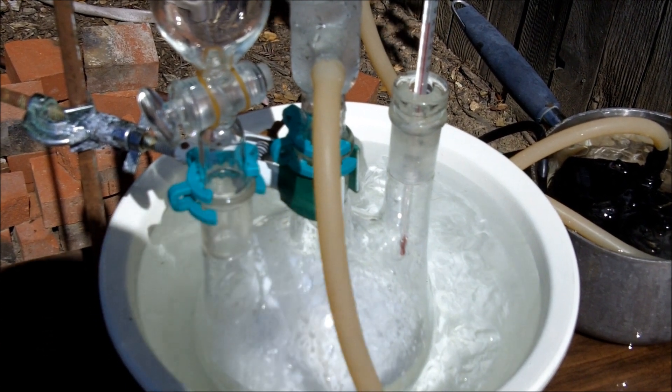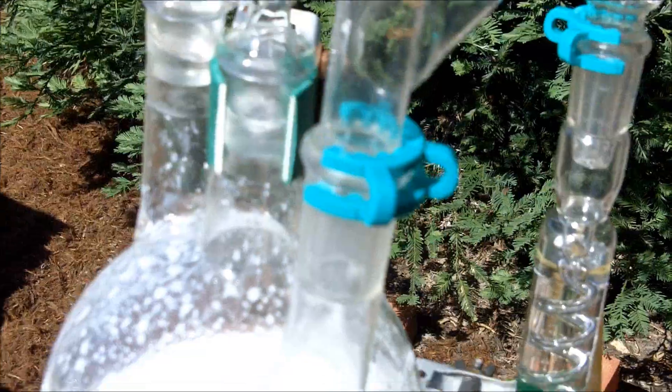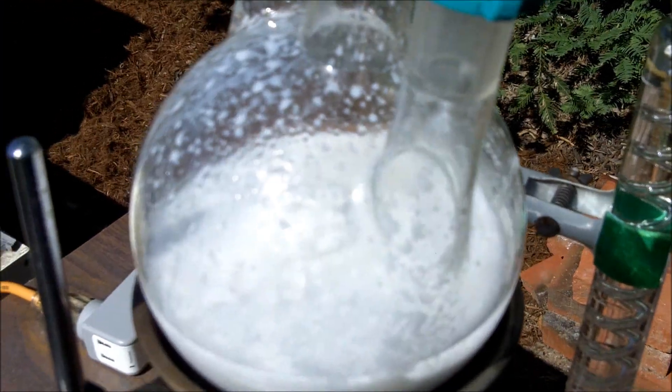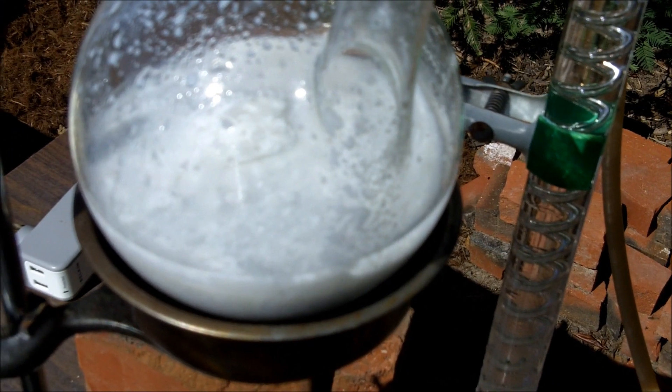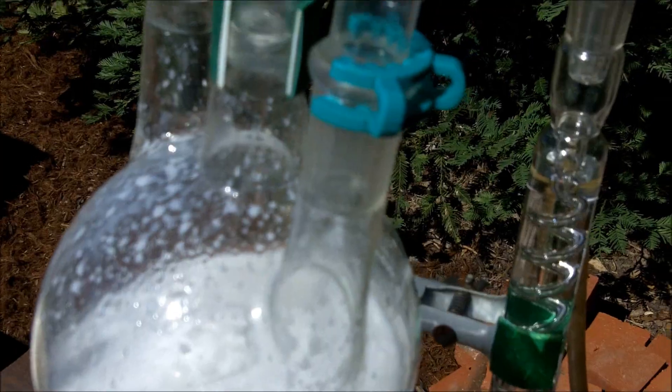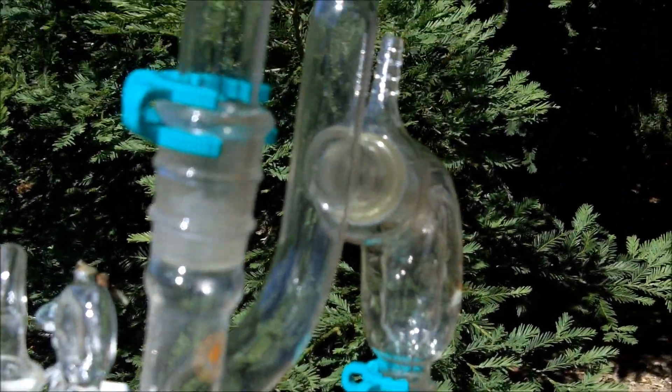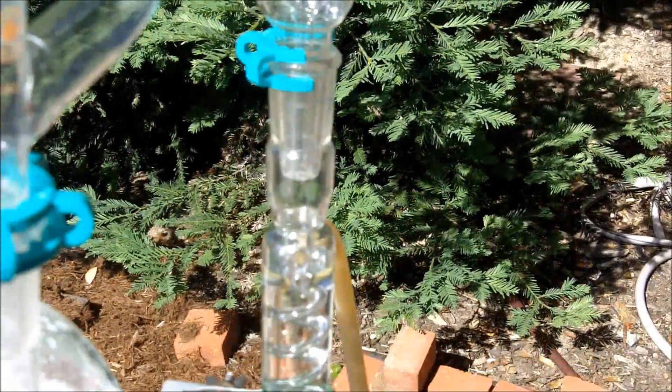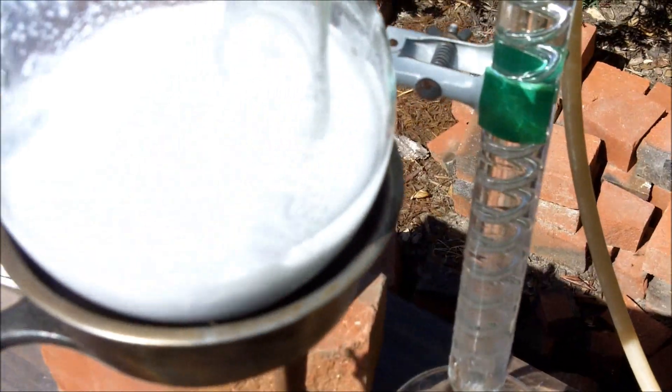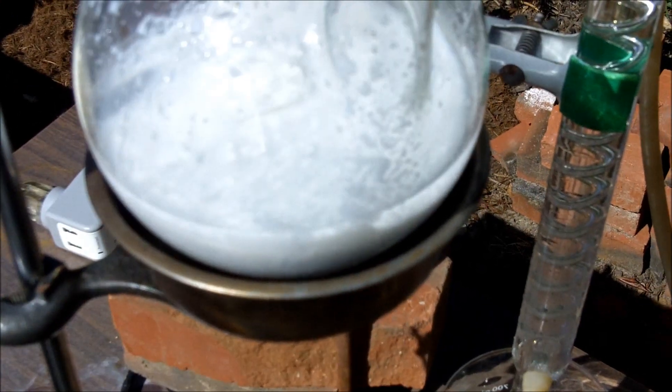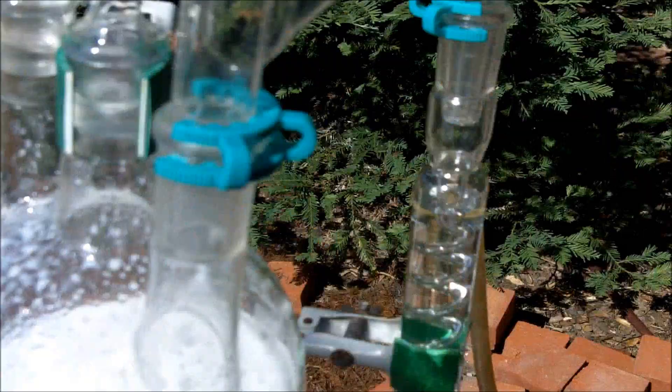Okay, here's my simple distillation setup. I've got the flask - haven't changed anything about it - on an oil bath, coming up to a Claisen still head, and then coming back down to my Graham condenser, and it's going into a beaker. I'll be heating the flask on the oil bath with a gentle flame and collecting what comes over.